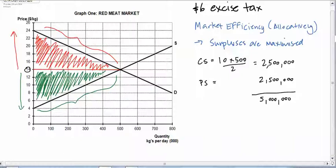So the total surpluses equated to $5,000,000. That was the total surplus. Now remember, the theory says that a market in equilibrium is where surplus is maximised.